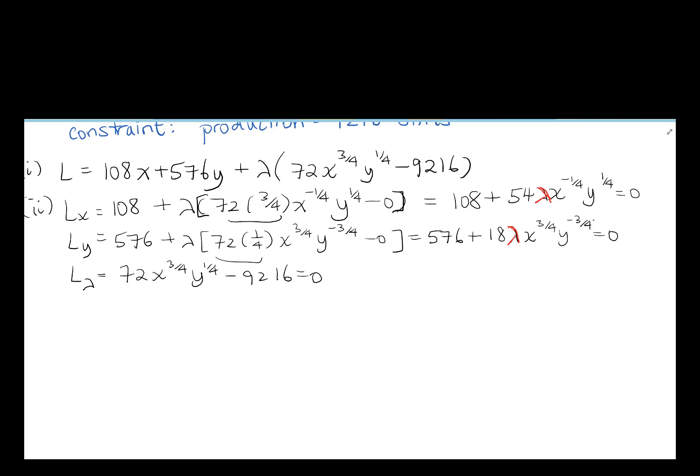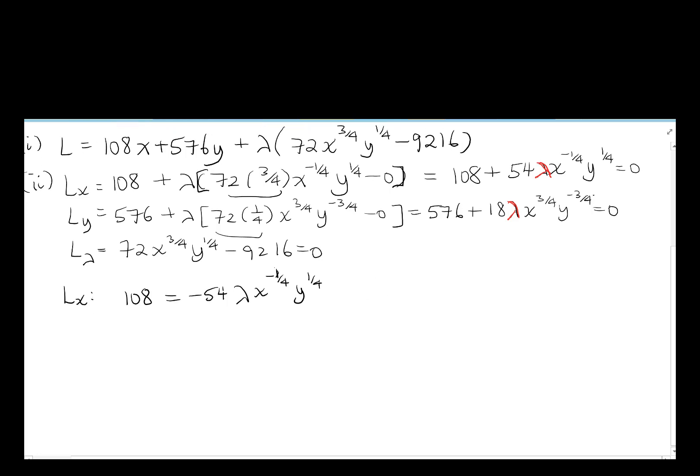In doing this, let's see what we get. We get 108 equals -54λx^(-1/4)y^(1/4) from the Lx expression. And we get, that gives us 108 over 54, make that negative, x^(1/4)y^(-1/4) when we move everything to the left side. That gives us lambda.